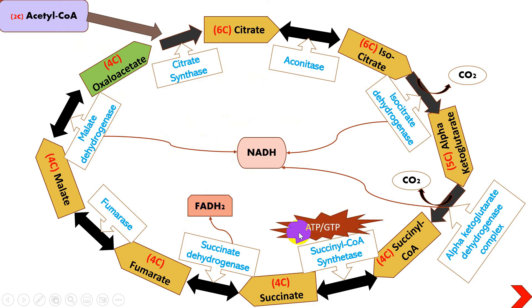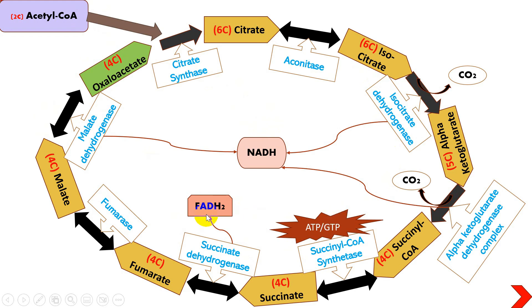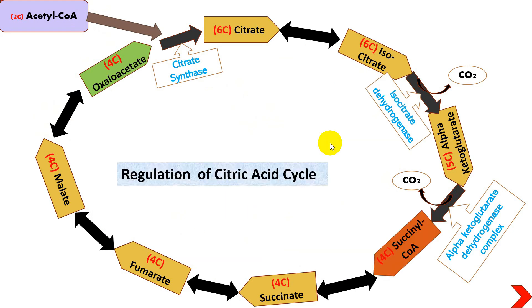Since a single glucose molecule produces two acetyl-CoA, the citric acid cycle runs twice per glucose. Therefore, a single glucose molecule yields six NADH, two ATP, and two FADH₂ molecules from the citric acid cycle. We will now look into the regulation of the citric acid cycle.